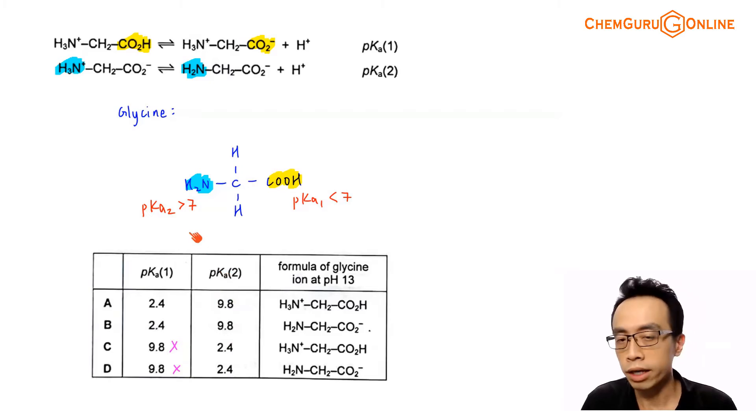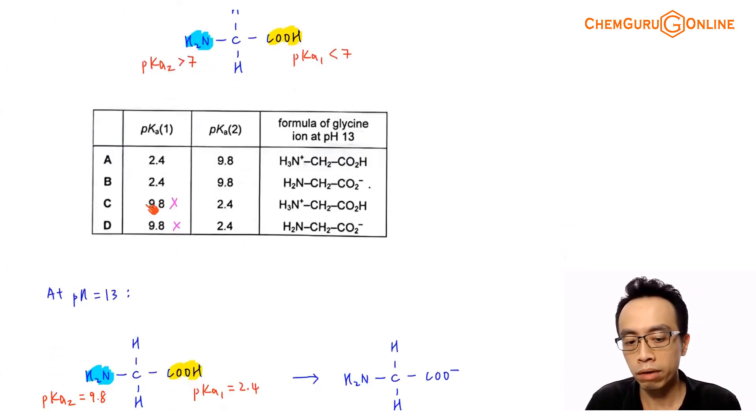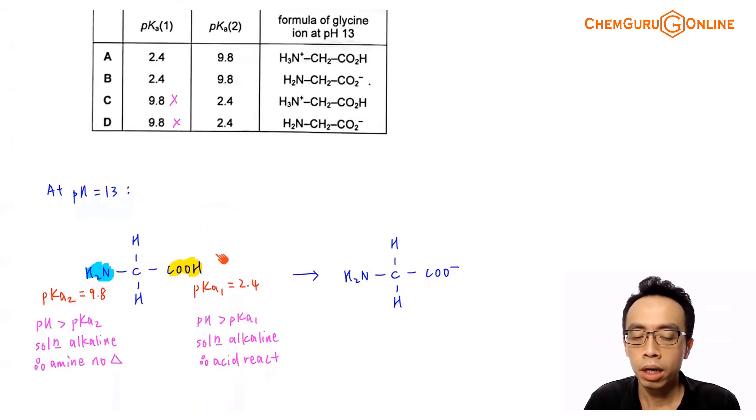So that's the first portion assigning the pKa values for pKa1 and pKa2. Now the next thing is, what if you throw this amino acid into pH equals to 13? Then what would this amino acid exist as? What we will have to do is consider the pKa value for each functional group.